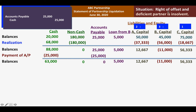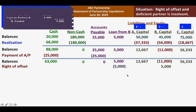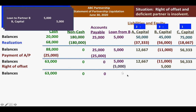The next situation is: apply the right of offset with the deficient partner insolvent. In the previous slide the deficient partner was solvent; here, the deficient partner is insolvent, meaning he has no capacity to pay the deficiency. We still apply the right of offset, leaving a balance of 6,000 for B capital. Since B cannot pay the 6,000, the other partners will shoulder or absorb the deficit. This 6,000 will be shared by partners A and C.